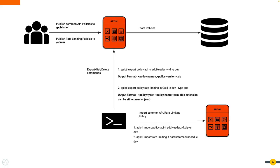Common API policies available in the publisher portal can now be manipulated via the API CTL. The API policies designed in the dev environment can be propagated to the prod environment using the API CTL. Such imported policies can be applied across all the APIs in the upper environment. Also, you can view the existing policies in each environment and if needed, can delete them with these commands.